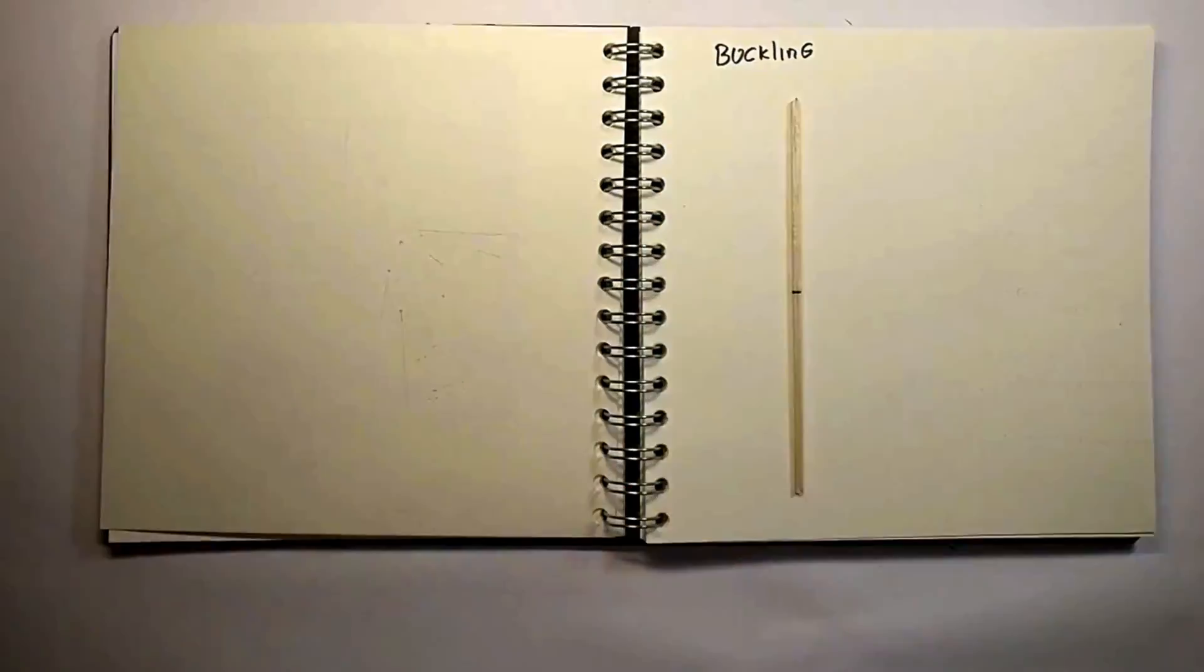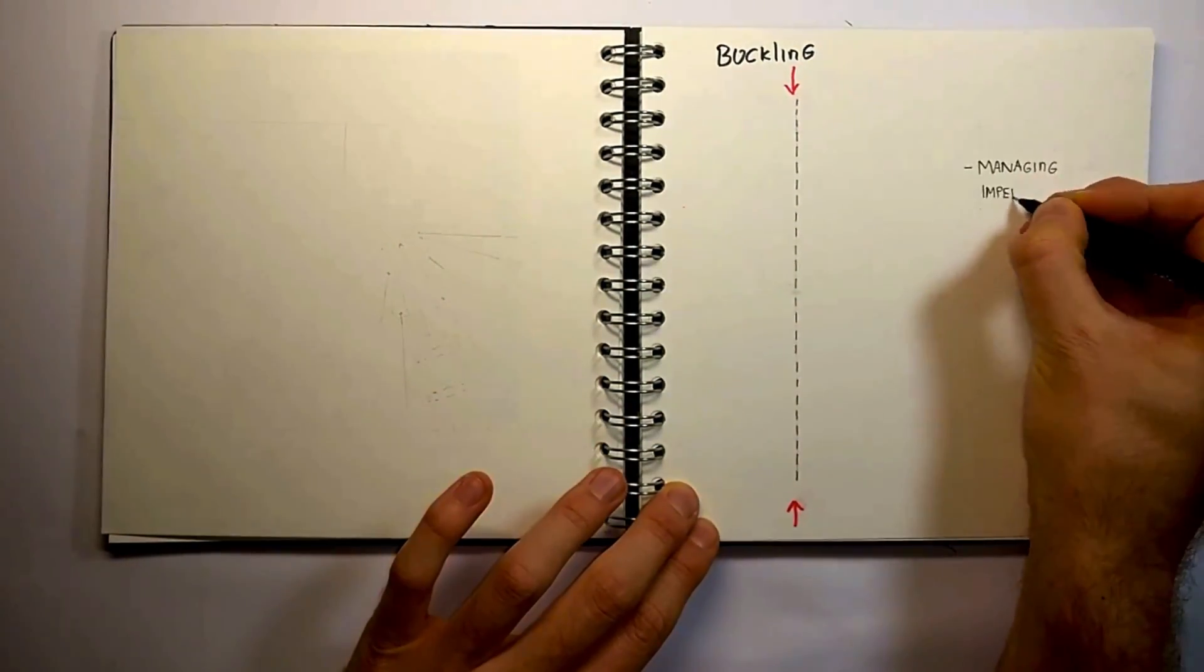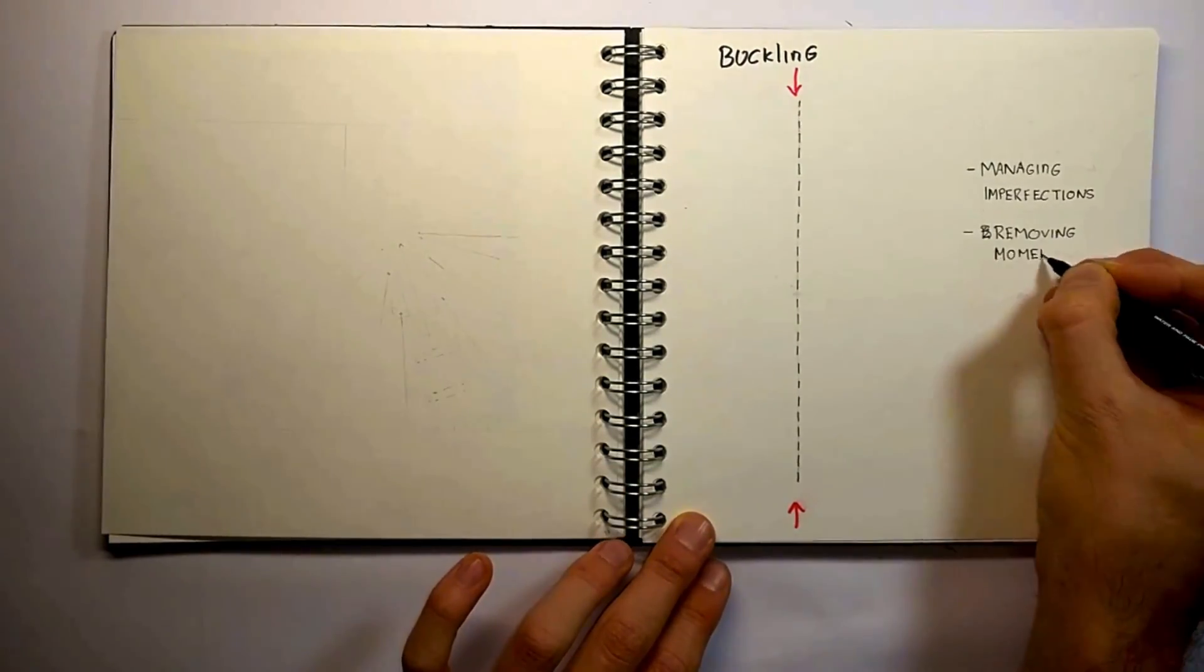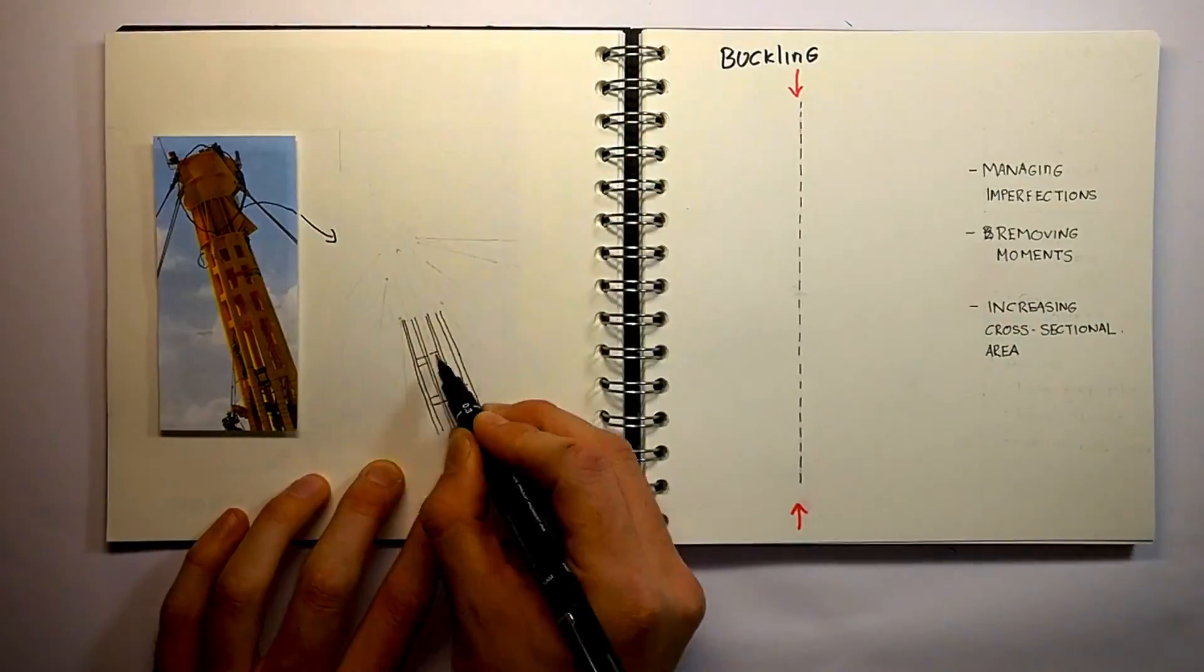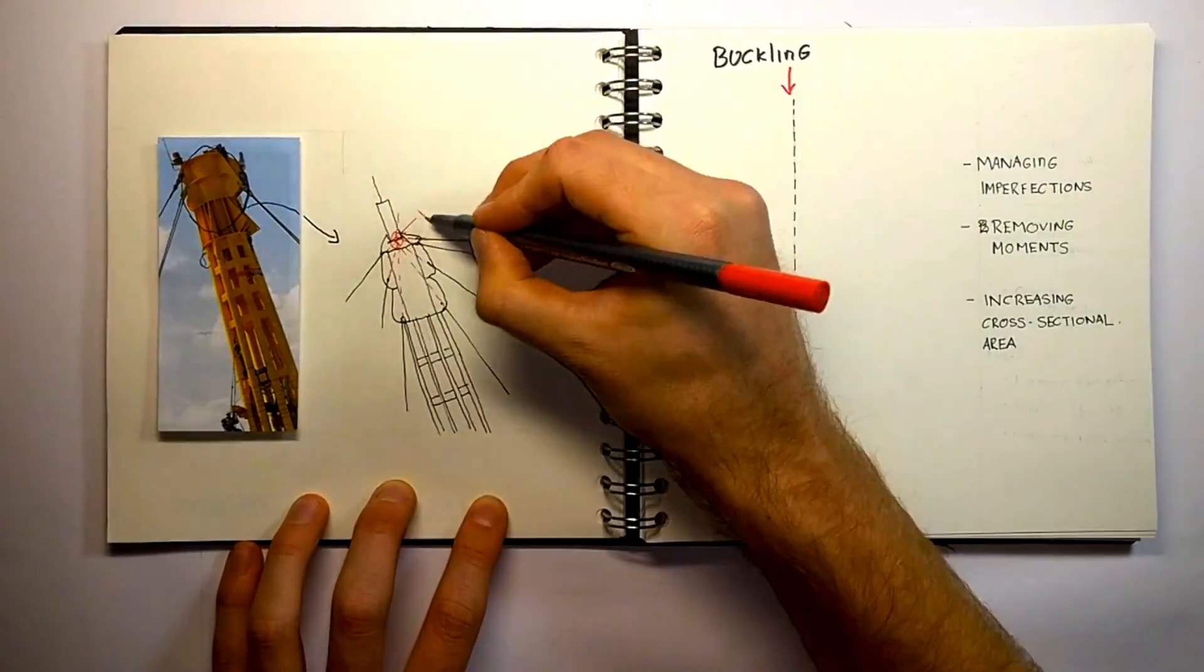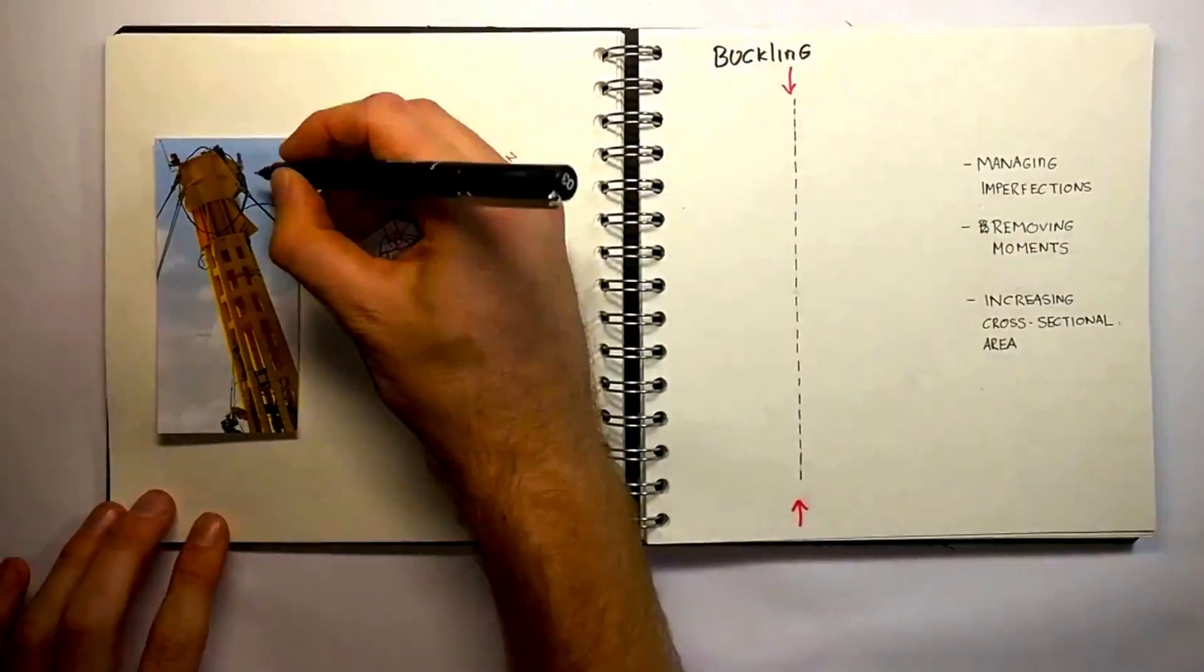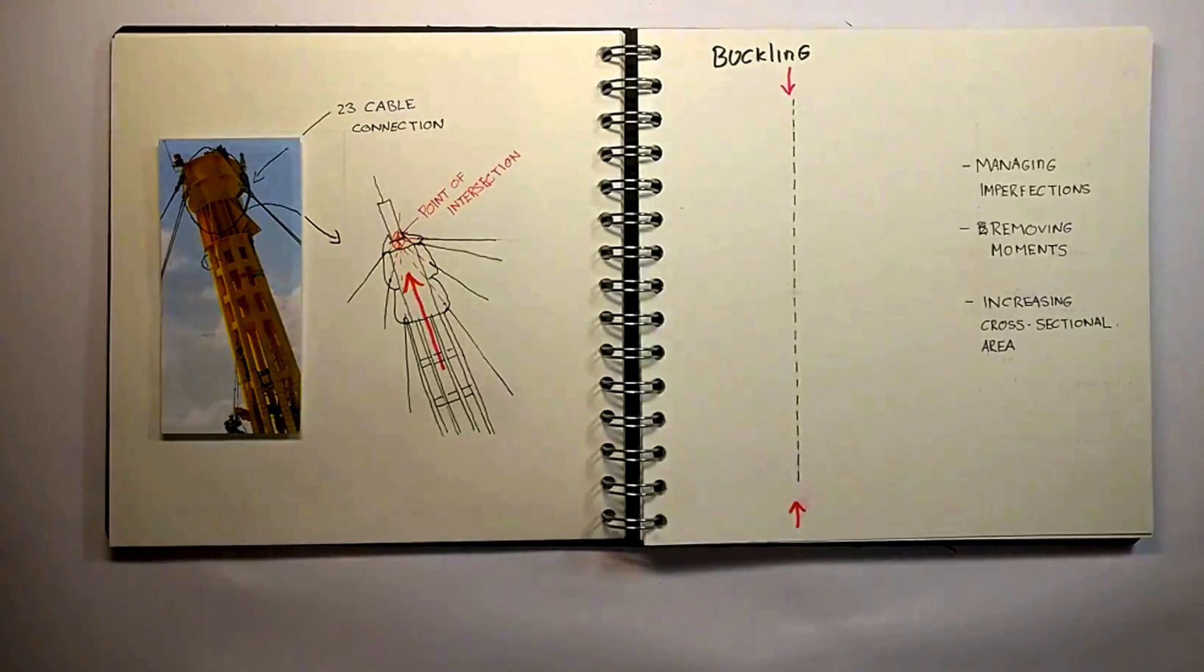Compression members are prone to buckling. However, this effect can be reduced by managing imperfections, removing additional moments and by increasing the cross-sectional area. In the case of the Millennium Dome, bending was reduced by ensuring that all the cables had theoretical lines of intersection at the top. This proved to be a complicated 3D connection with 23 cables requiring support.